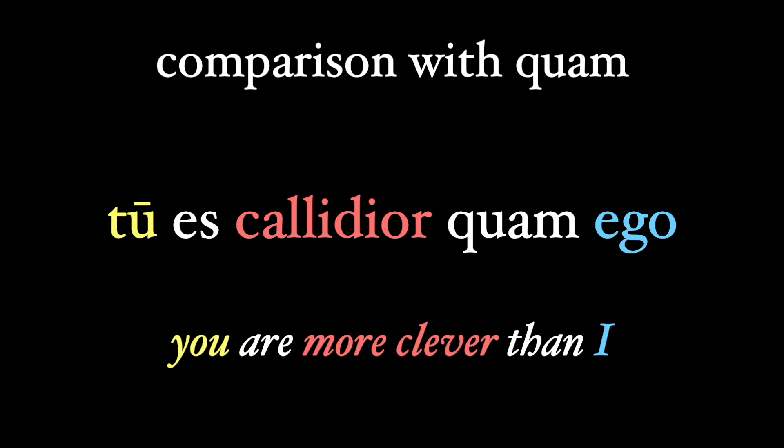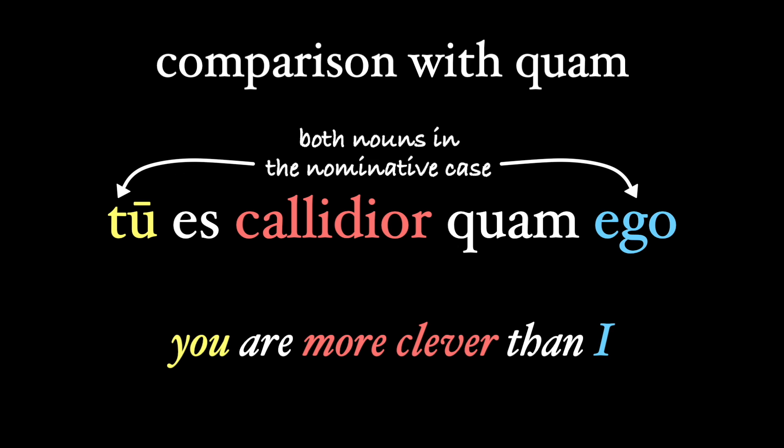Tu es callidior quam ego — you are more clever than I. Both tu and ego are in the same case, the nominative. This brings up an interesting point of English grammar. I bet if I heard this in the hallways of my school, I'd hear 'than me' rather than 'than I,' but the Latin makes it clear that we are comparing words in the same case: tu and ego, meaning you and I.